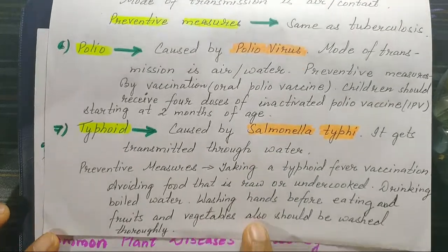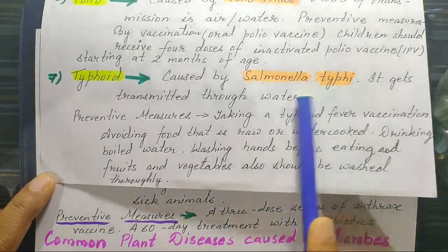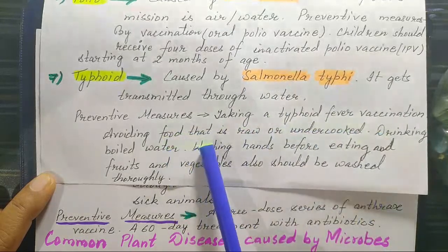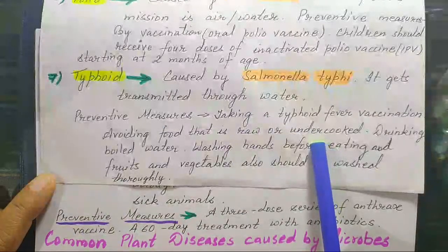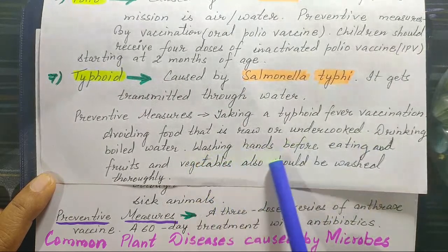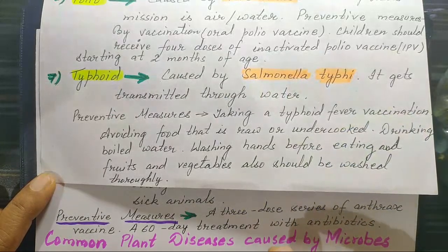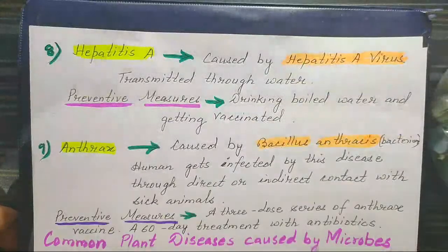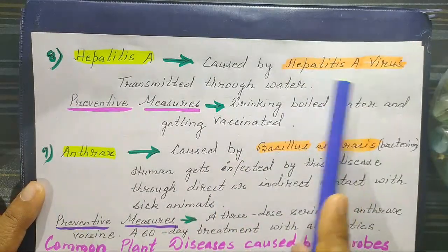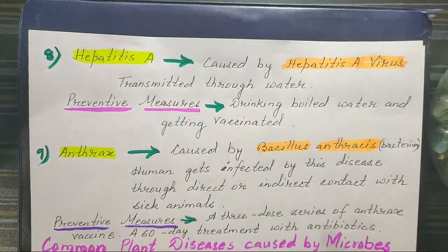Typhoid is caused by Salmonella typhi and gets transmitted through water. Preventive measures include taking a typhoid fever vaccination, avoiding raw or uncooked food, drinking boiled water, and washing hands before eating. Fruits and vegetables should also be washed thoroughly. Hepatitis A is caused by the Hepatitis A virus and is also transmitted through water; preventive measures are drinking boiled water and getting vaccinated.